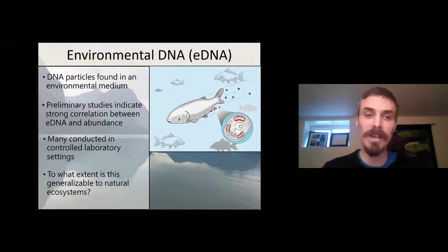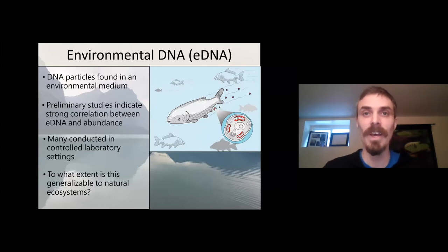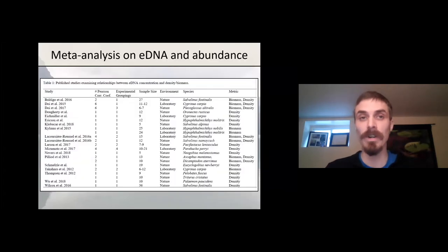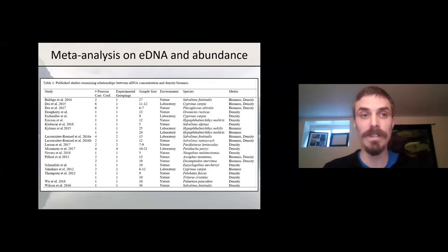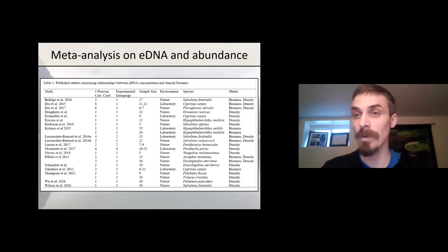Notably, many of those studies were conducted in controlled laboratory settings. So I was really interested in the question: to what extent is this generalizable to natural ecosystems? To address this question, I actually did a meta-analysis where I statistically examined published studies that looked at the relationship between eDNA concentration and density or biomass of organisms in an environment.